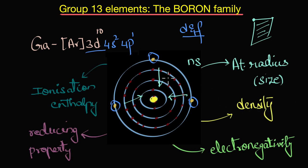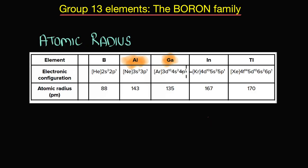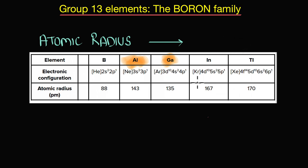All of the variation in these properties arises because of this effect. Let's begin with atomic radius. As we go down the group, the atomic radius should increase because of the addition of newer shells — the outer electrons tend to go farther from the nuclear pull. But is that what's happening here?